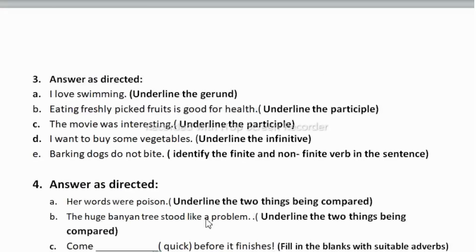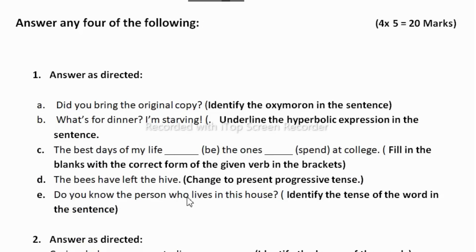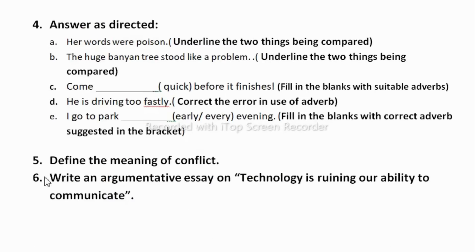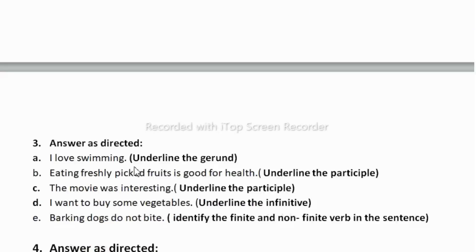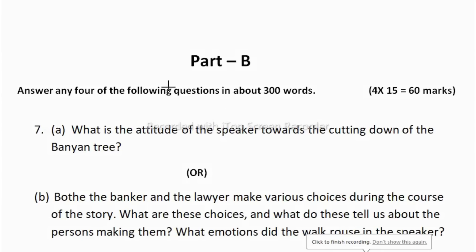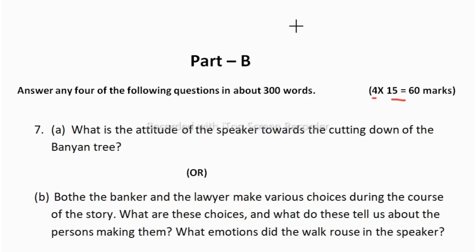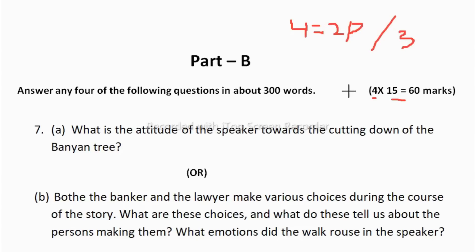From the 8 Part A questions you can answer any 4 — you can skip 2. If you learn the 4 vocabulary and 4 grammar topics, you can easily score. Now Part B: answer any 4 of the following questions in about 300 words each. For each question you get 15 marks, totalling 60 marks. 300 words means 4 pages, which equals 2 papers front and back, or at least 3 full pages.